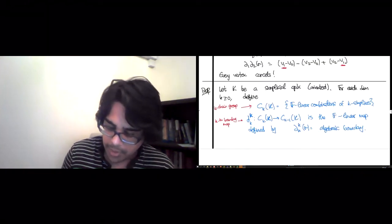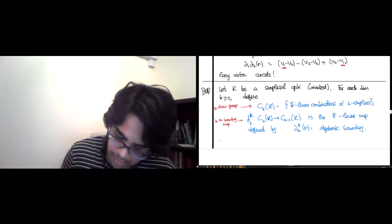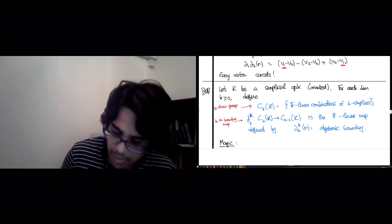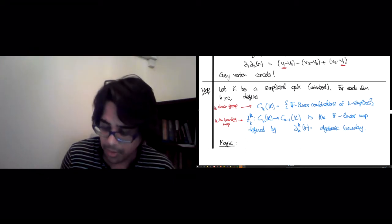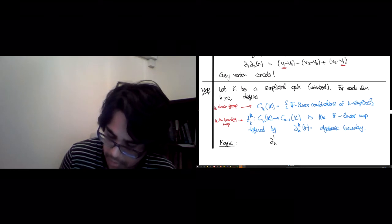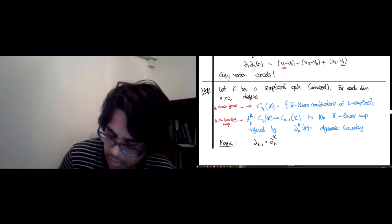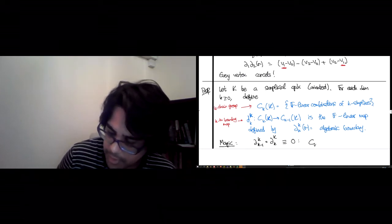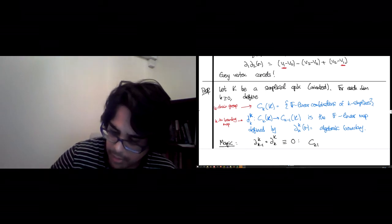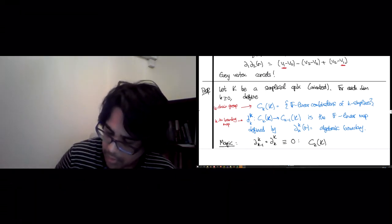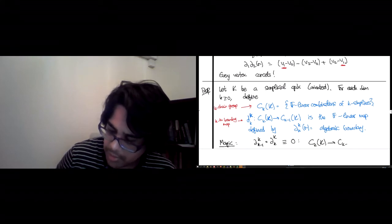And the magic property is based on the previous proposition is that any time you take del k and del k minus 1, this is always going to be the zero map from ck to ck minus 2.